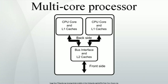Multicore processors may have two cores (dual-core CPUs, e.g. AMD Phenom 2x2 and Intel Core Duo), 4 cores (quad-core CPUs, e.g. AMD Phenom 2x4, Intel i5 and i7), 6 cores (hexa-core, e.g. AMD Phenom 2x6 and Intel Core i7 Extreme Edition 980x), 8 cores (octo-core, e.g. Intel Xeon E7-2820 and AMD Phenom 2x8350), 10 cores (e.g. Intel Xeon E7-2850), or more.